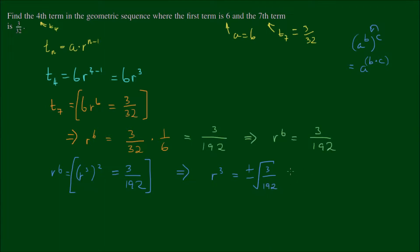This is now where we're going to get lucky, because 192 on the bottom can be written as 64 times 3. So we have plus or minus the square root of the 3 and the 3 cancels. So we have the square root of 1 on 64, which equals, for the numerator, the square root of 1 is equal to 1, and on the bottom, the square root of 64 is equal to 8.